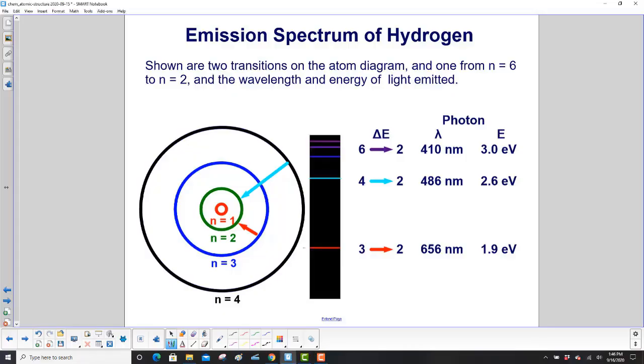Shown are two transitions on the atom diagram. One from n equals 6 to n equals 2, which we don't show because here we have n equals 4—n equals 6 would be off the page. But we do show 3 to 2. So that is this one right here, the red arrow, where you go from n equals 3 to n equals 2. And that's a red line. There it is in the spectra.